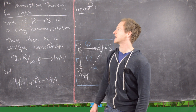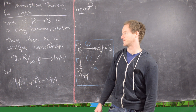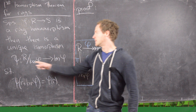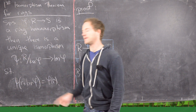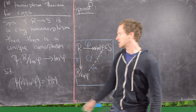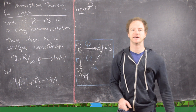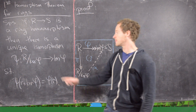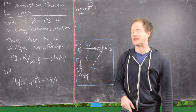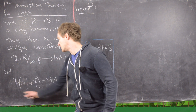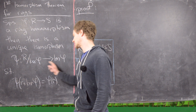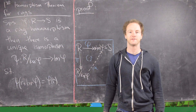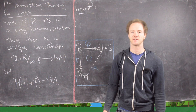We'll suppose that phi from R to S is a ring homomorphism. Then there is a unique ring isomorphism psi from R mod the kernel of phi — that's going to be the quotient ring; we know that the kernel is an ideal from a previous video, so we know that that forms a ring — and that's going to go into the image of phi. That isomorphism satisfies: psi of the coset R plus kernel of phi is going to be the same thing as phi of R.